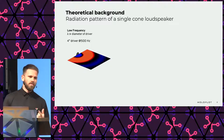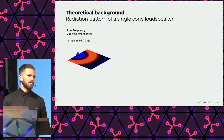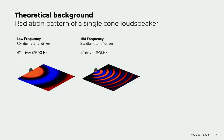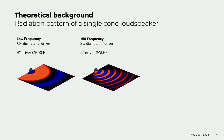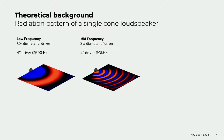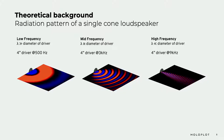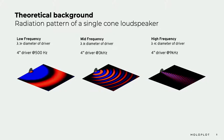At low frequencies, the wavelength of sound is way larger than the size of the driver, so the resulting sound field spreads out evenly in all directions with the same level. At mid frequencies, when the wavelength is more or less the same size as the driver, you will hear louder sound in front of the loudspeaker, and if you move sideways the sound level will decrease a little. At high frequencies, when the wavelength is way smaller than the loudspeaker, the radiation pattern will show a very rapid level decrease as you move off-axis from the loudspeaker.